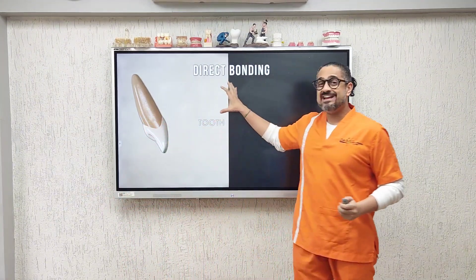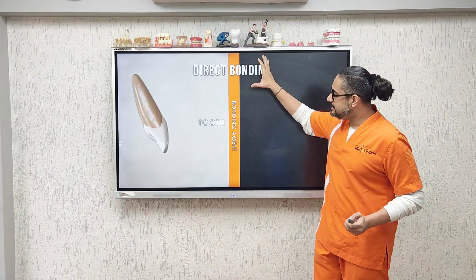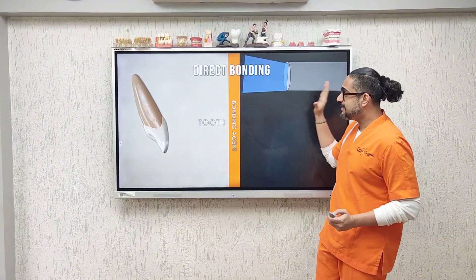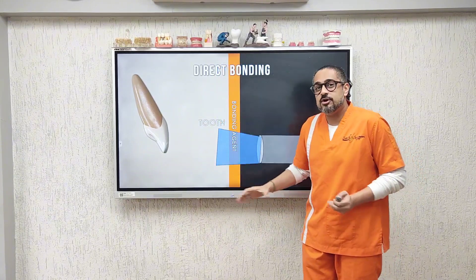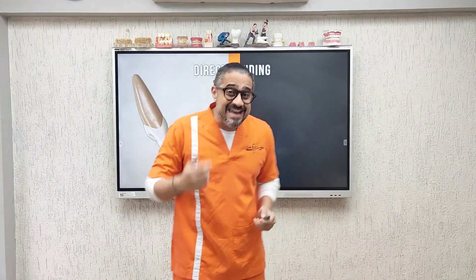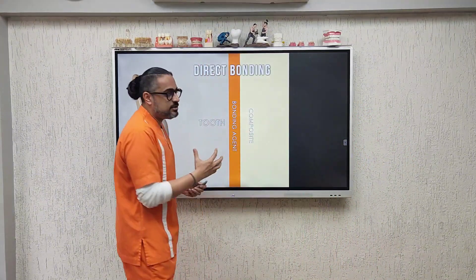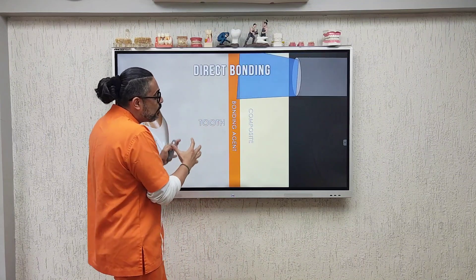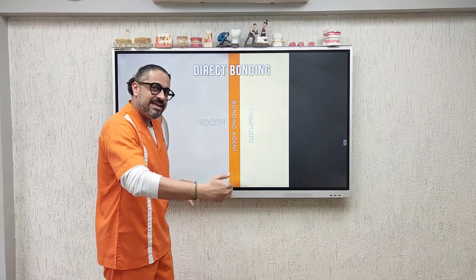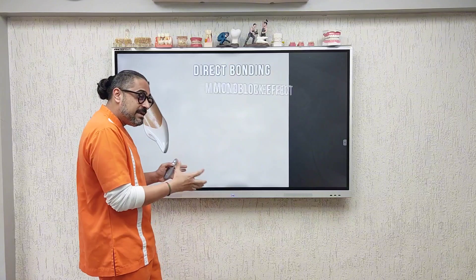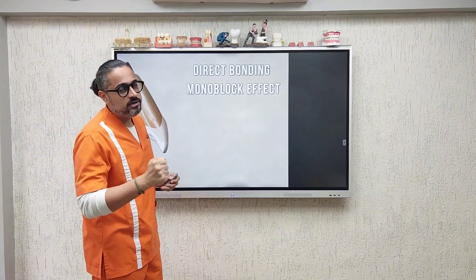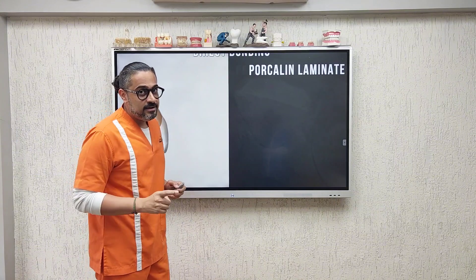When I do a direct composite build up, the first increment is always a bonding agent that is applied on top of the tooth. The bonding agent is light cured so that we can get a hybrid layer formation. Next comes the increment of composite on top, which is then light cured. This means I have applied the light curing agent twice, and this gives me what I am looking for — the mono blocked effect.